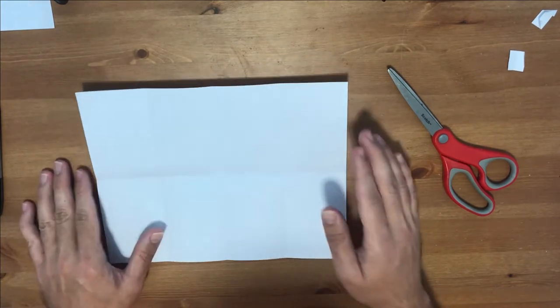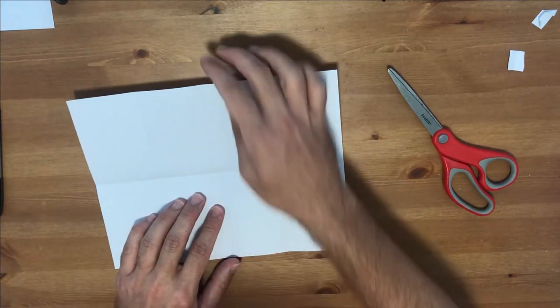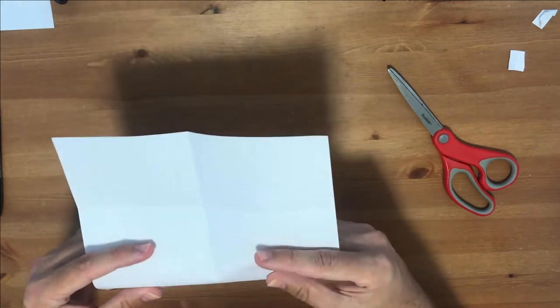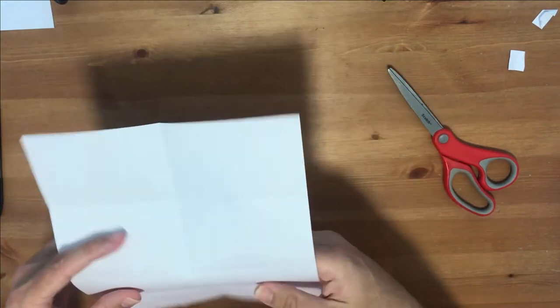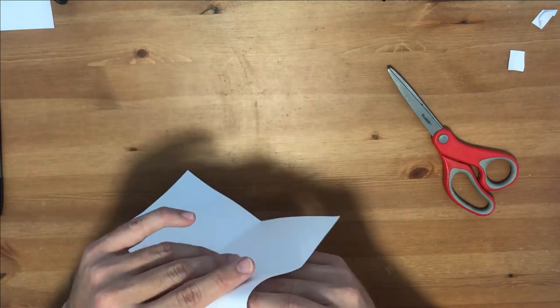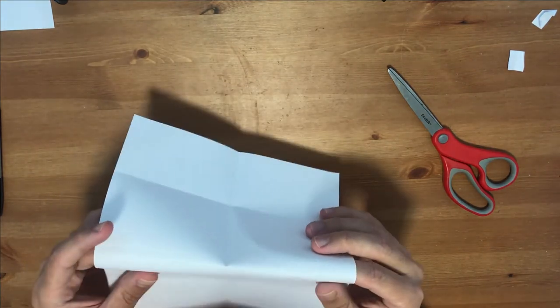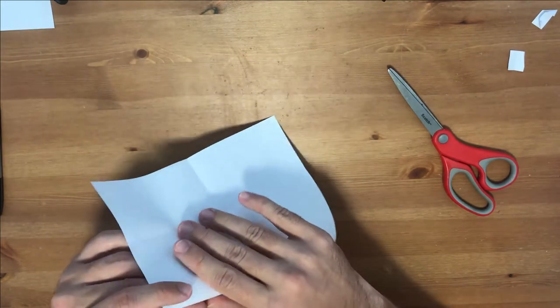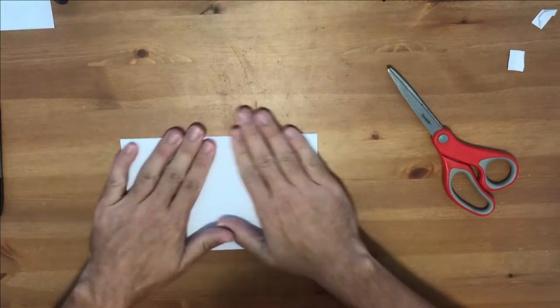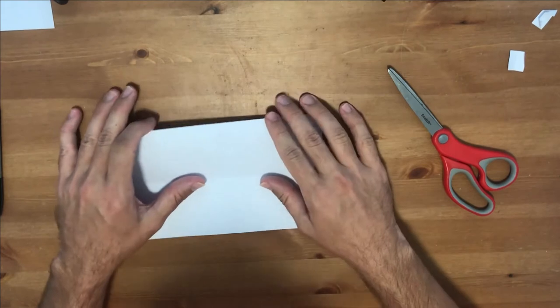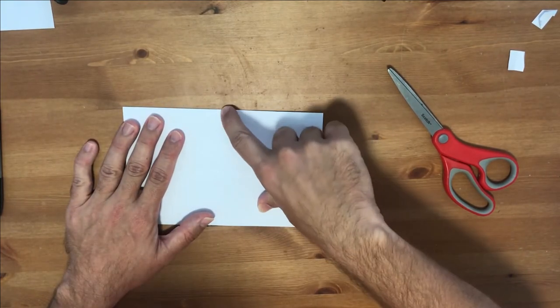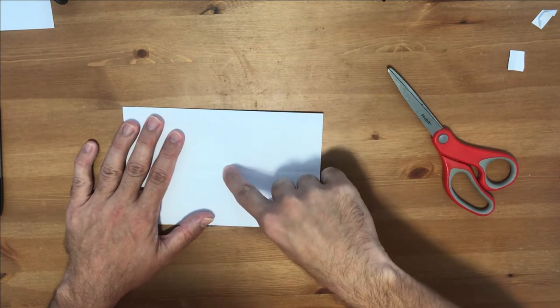Unfold it again. Now we're going to fold back on the half. I kind of like folding it back against the way that you did it before. And now we're going to cut down this line from the center crease here to that little point right there.